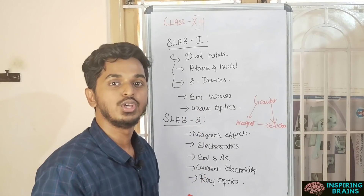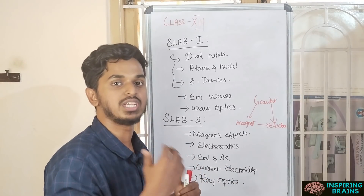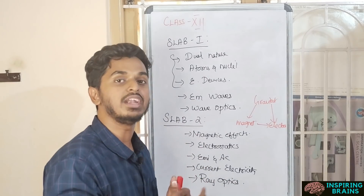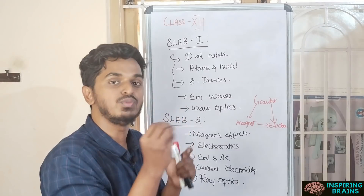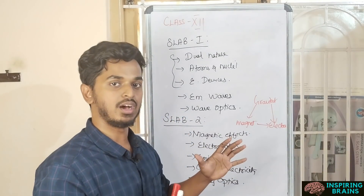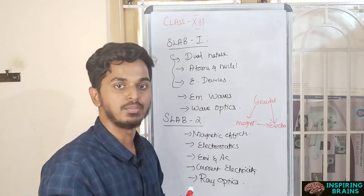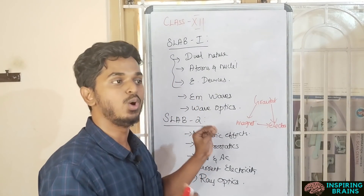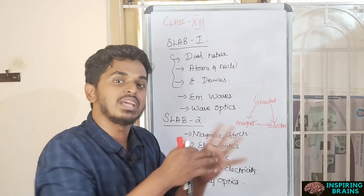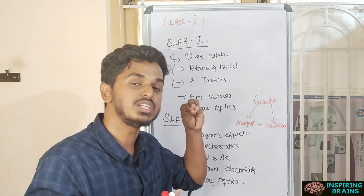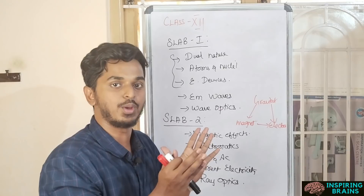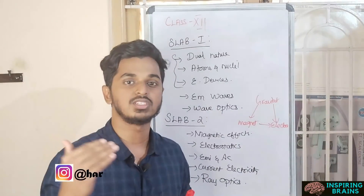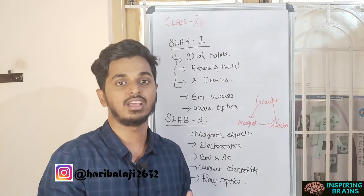To complete both Slab 1 and Slab 2 effectively, you must also do previous year questions, which I covered in my last video. Do them again and again — only then will you get an idea of how questions appear. When you start a unit, first take a book and attempt previous year questions so you know what pattern to concentrate on. This is the Slab 1 and Slab 2 strategy for Class 12.